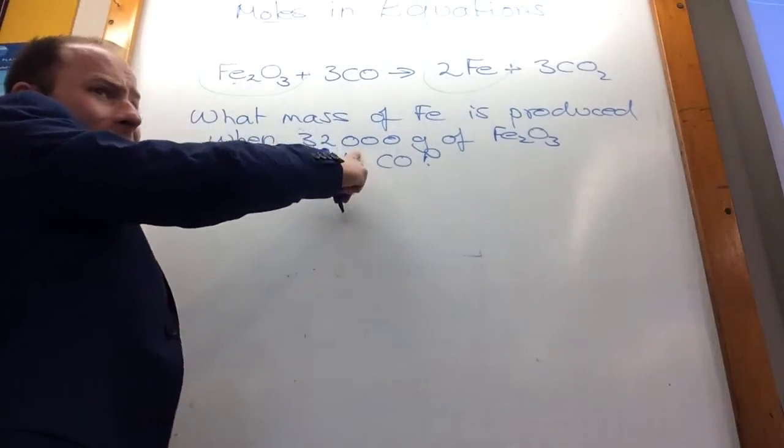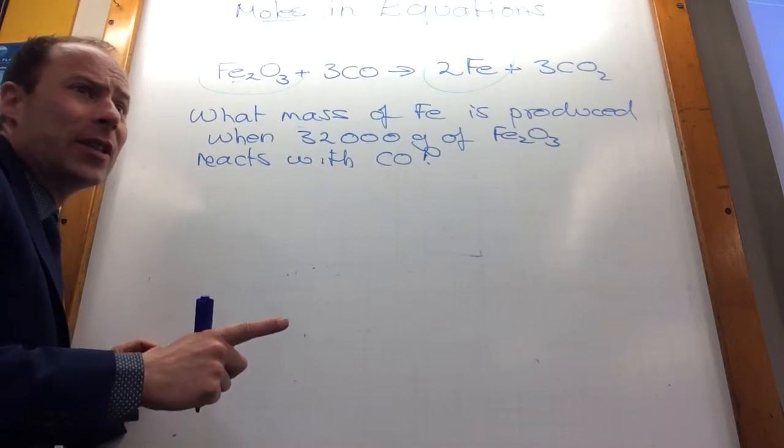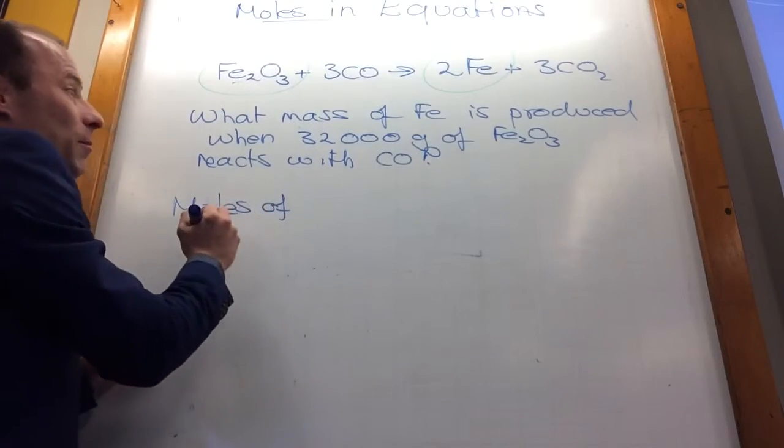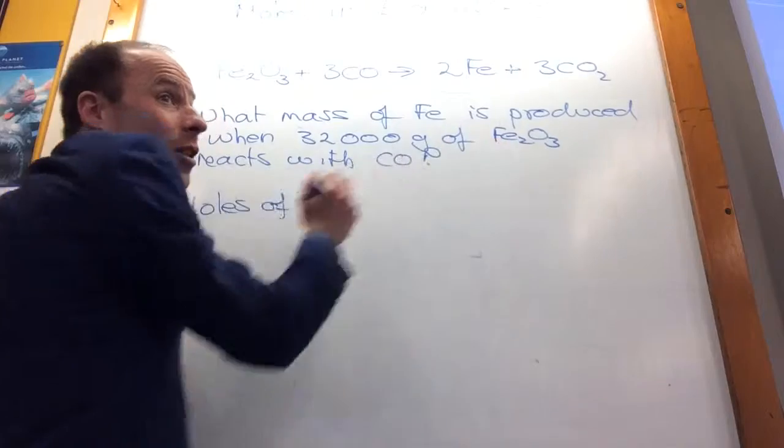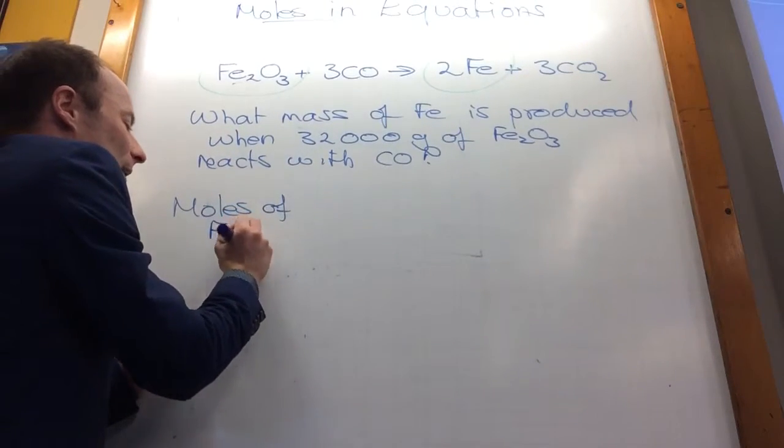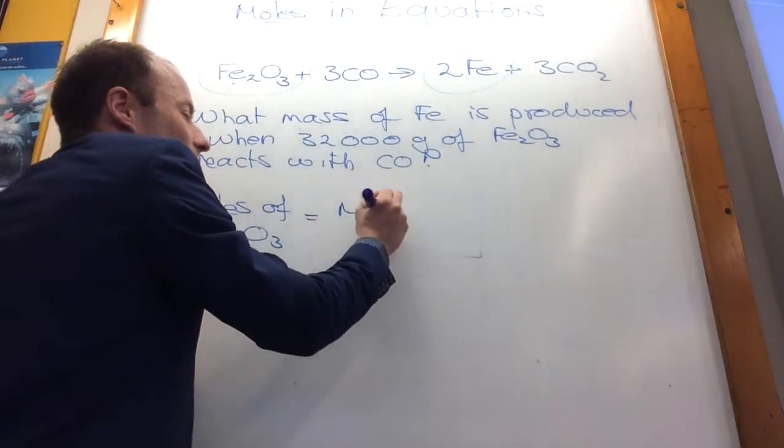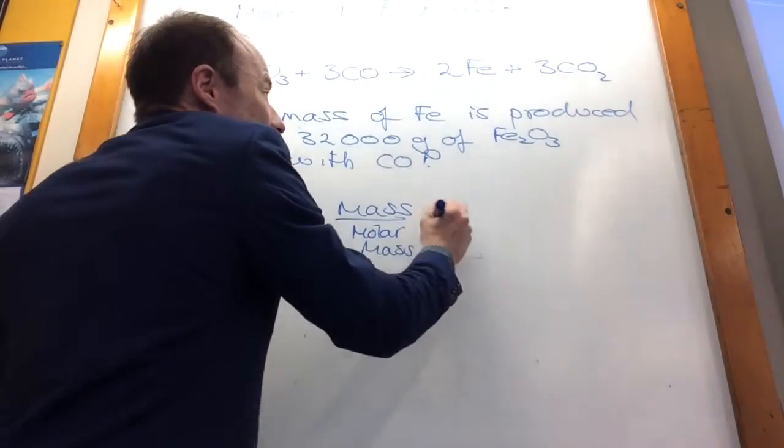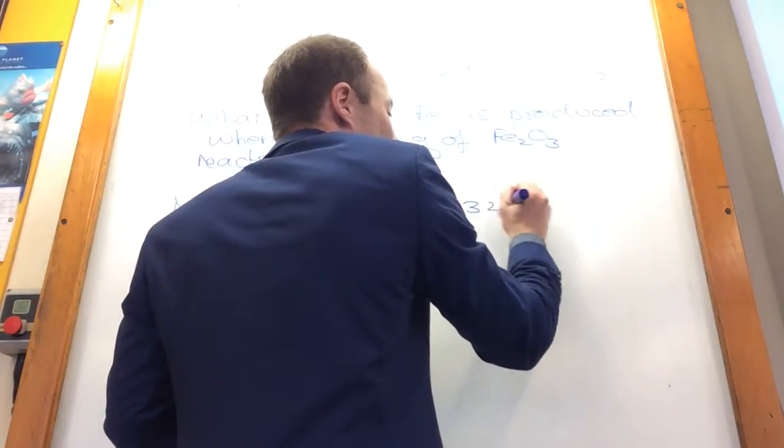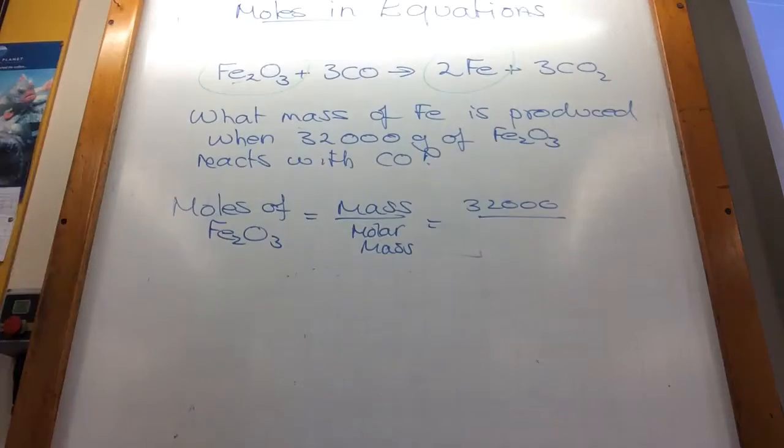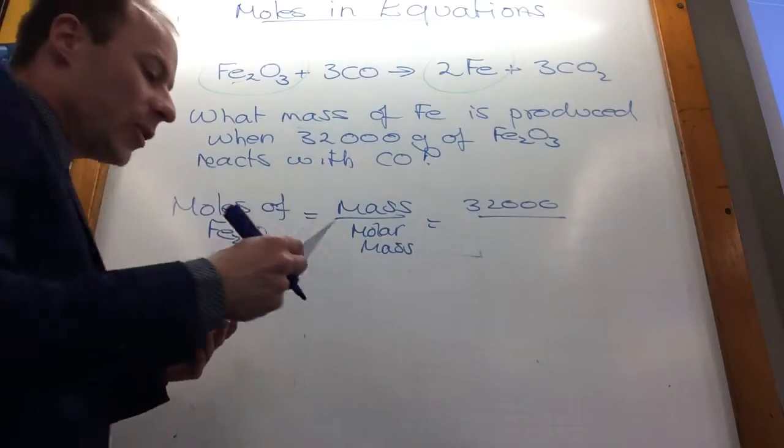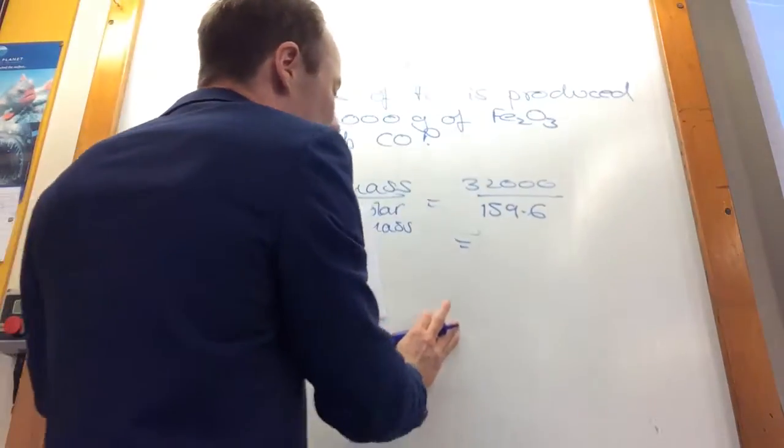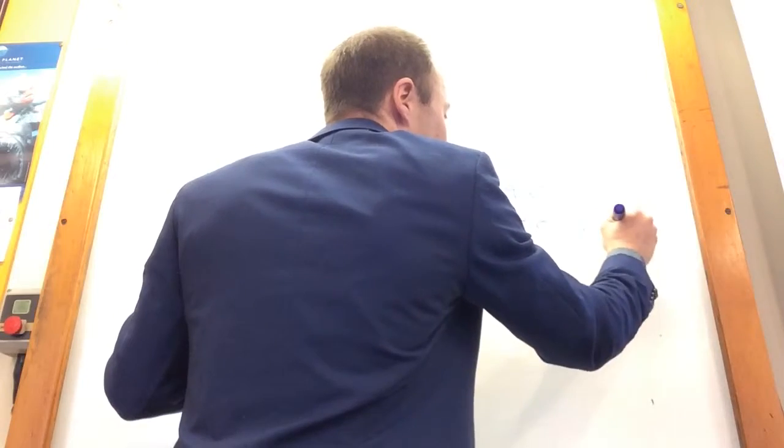The first thing, if they give you a mass, in chemistry you always convert it to moles. So what can I find the moles of? I can find the moles of iron oxide because they've given me the mass of it. Moles of iron oxide is mass over molar mass. The mass is 32,000 grams. The molar mass they've actually told me, but it'd be easy to find out because you just add it all up, is 159.6. If you do that, you get 200.5 moles.